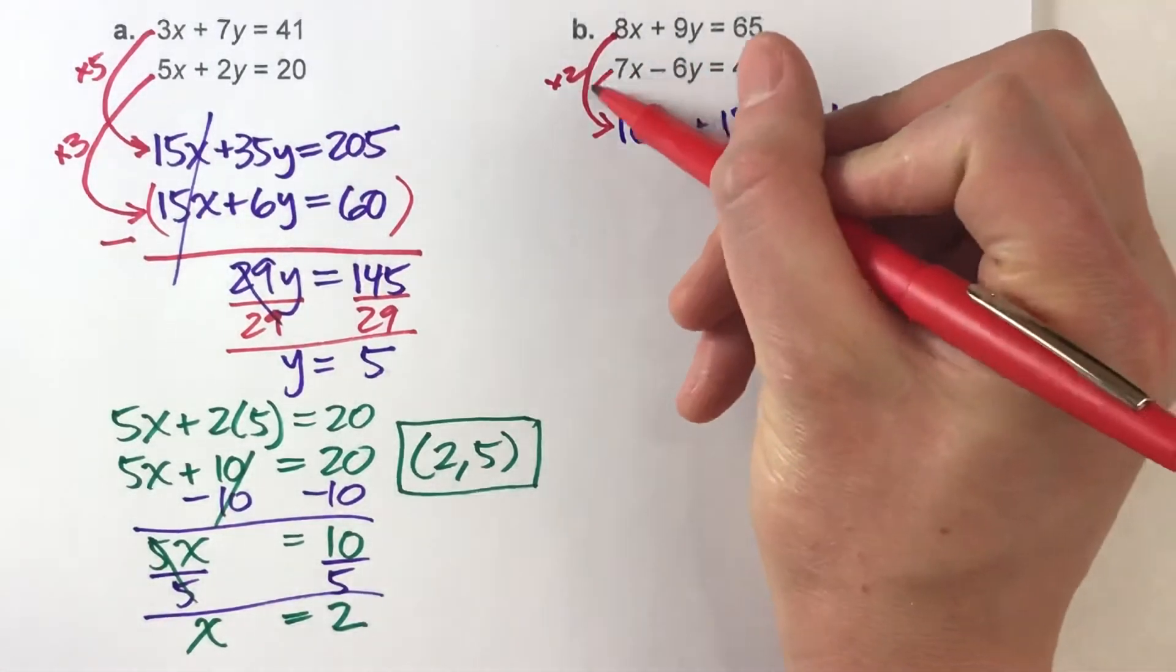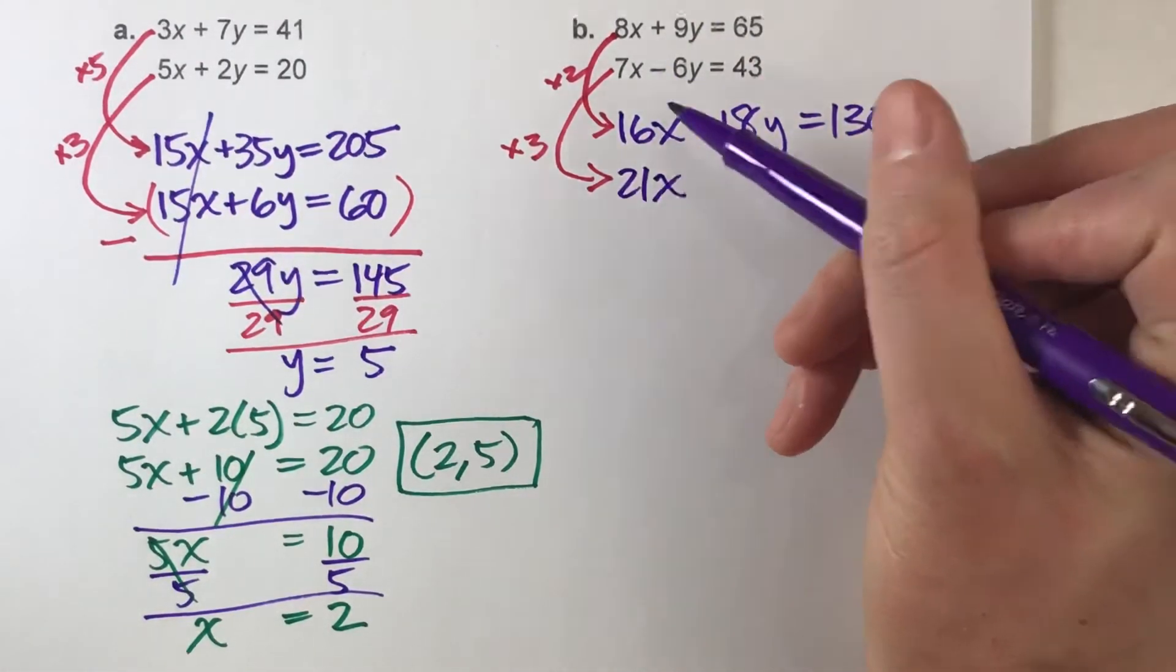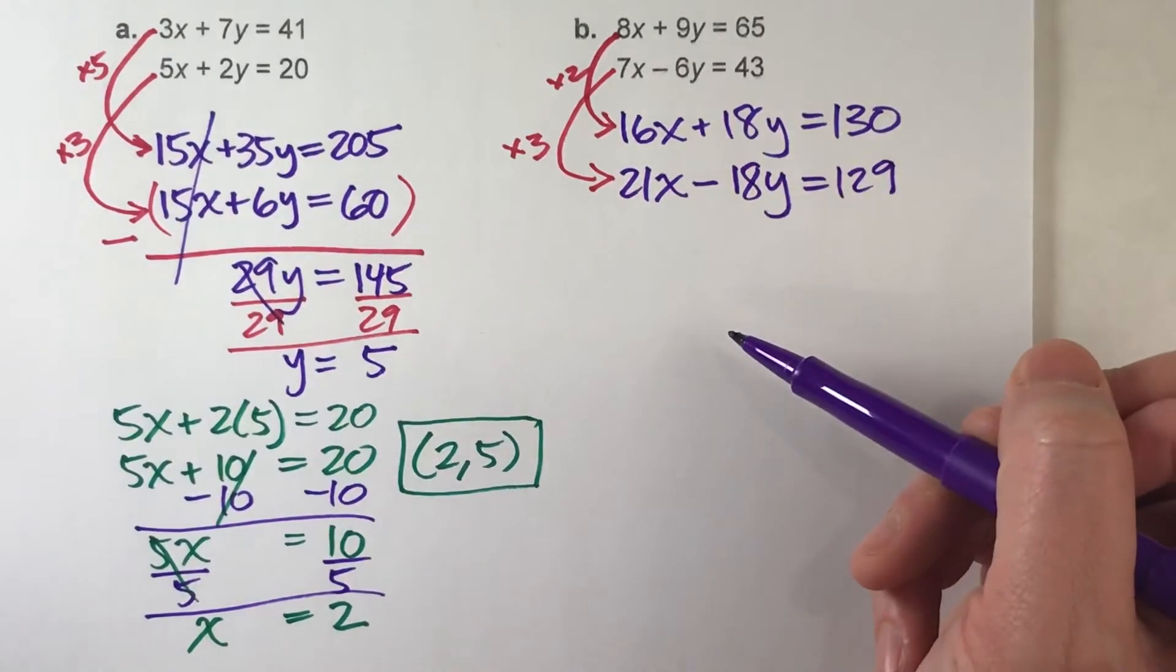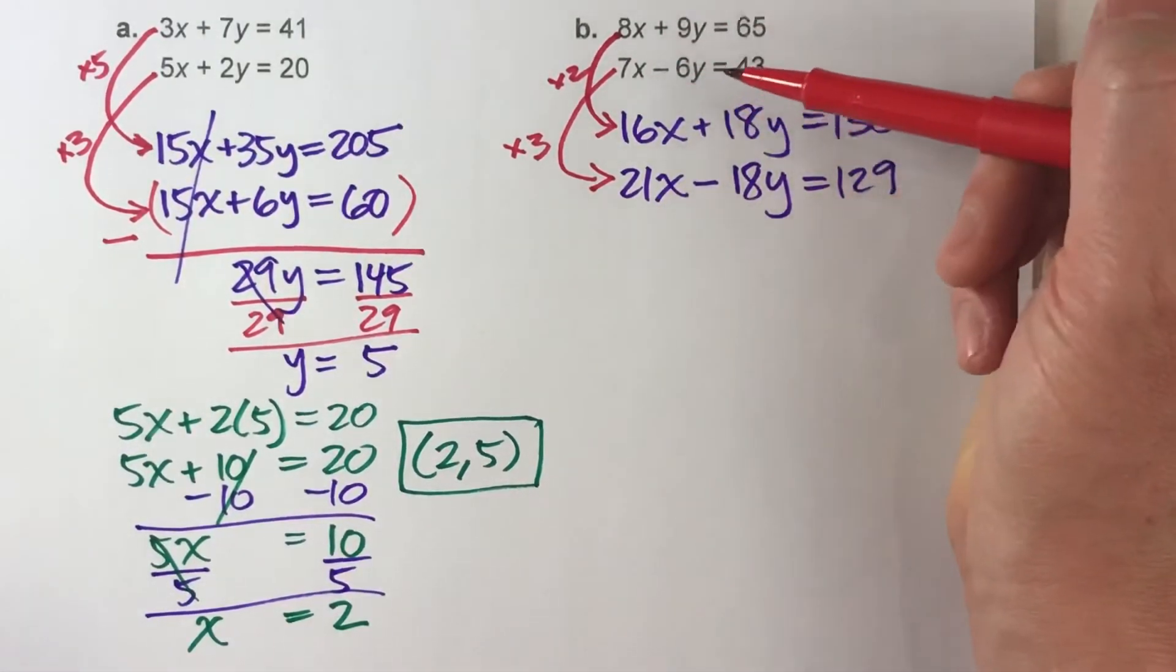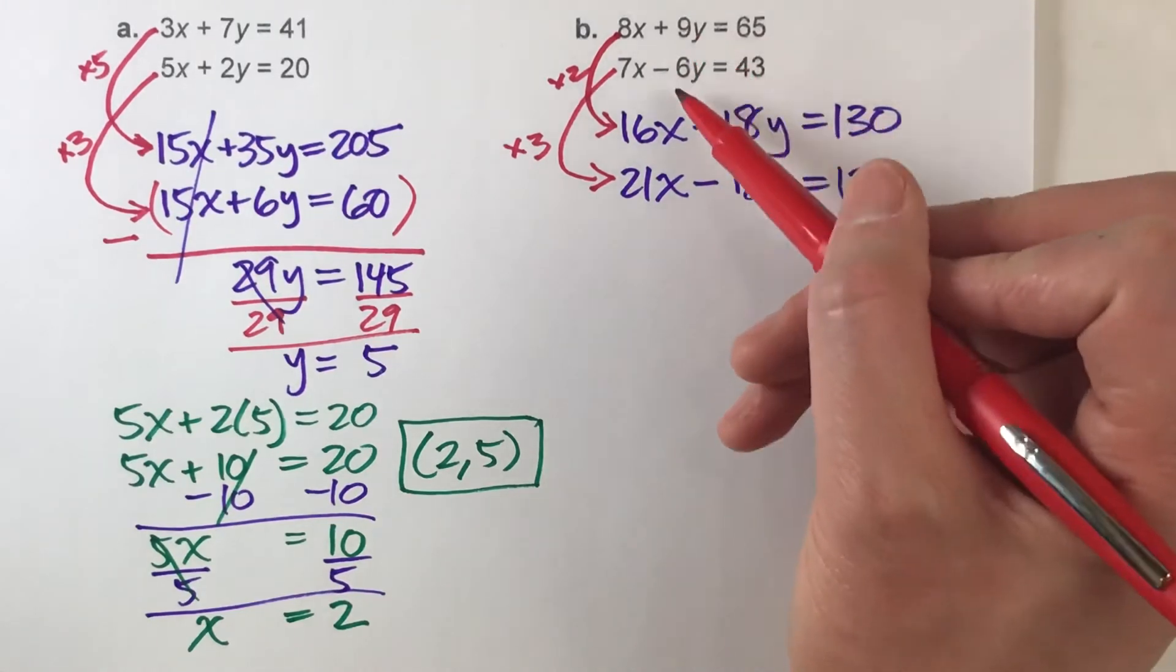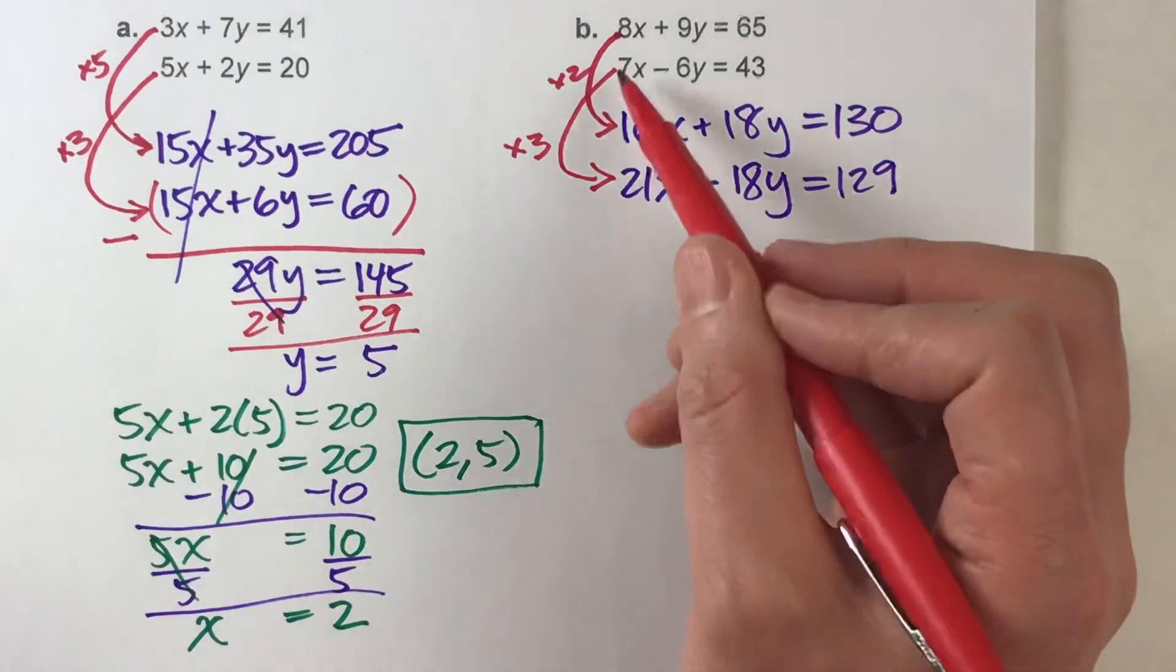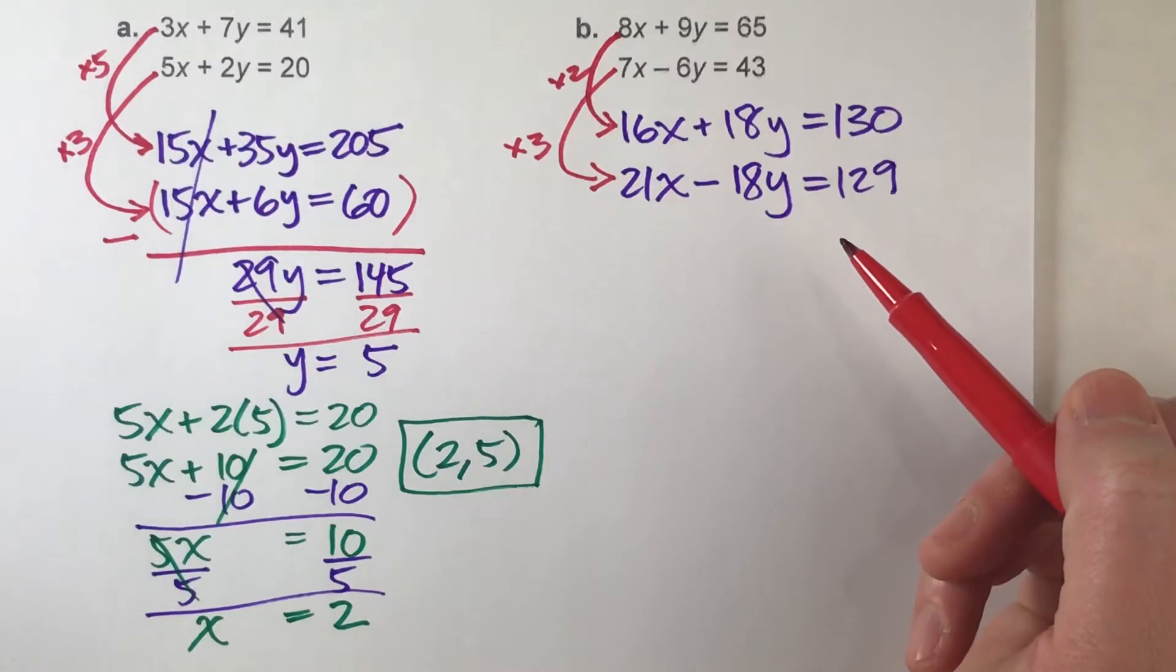Now when I multiply the second equation, I'm going to multiply it by 3. And by doing that, I get 3 times 7x is 21x, 3 times negative 6y is negative 18y, and 3 times 43 is 129. And look, my y's match up, so now I can solve the system. So again, looking at the two equations, planning ahead, and seeing if you can find a common multiple is really going to help you out. And you can match up either the x's or y's, and finding the smaller common multiple will also make the problem a lot less complicated. Like if I multiplied the top one by 7 and the second one by 8, these equations would be huge, but by multiplying by smaller numbers, I can still match up the y's and not have to deal with such huge numbers. Let's solve this.